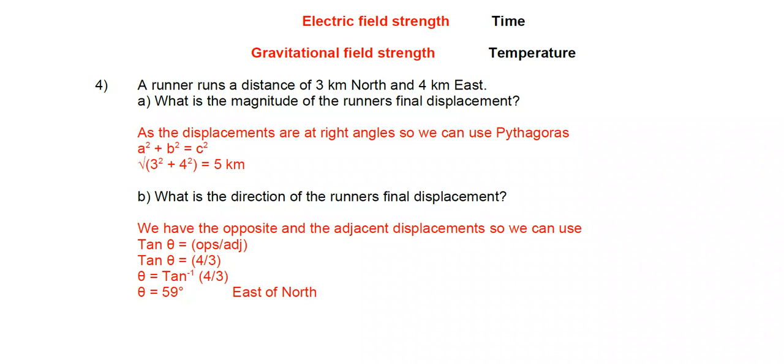What is the direction of the runner's final displacement? We have both the opposite and the adjacent displacements, so we can use tan. Tan theta is opposite over adjacent.